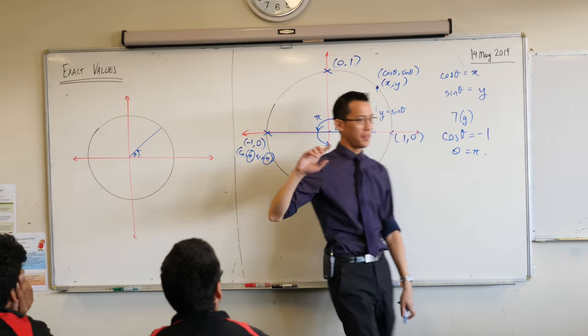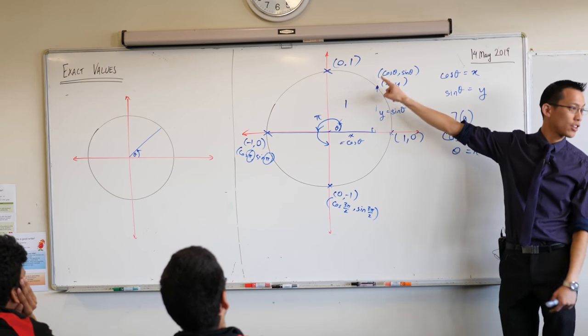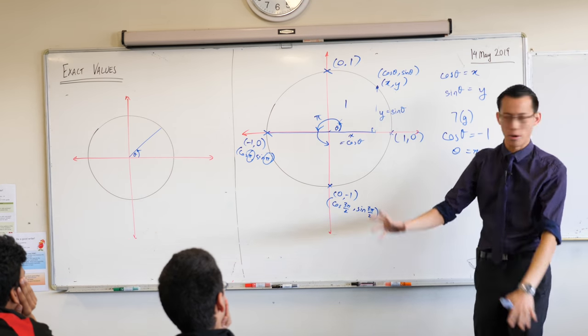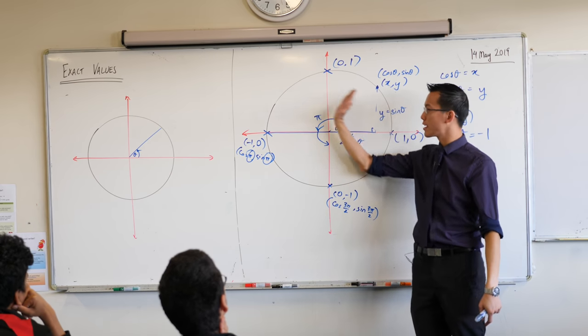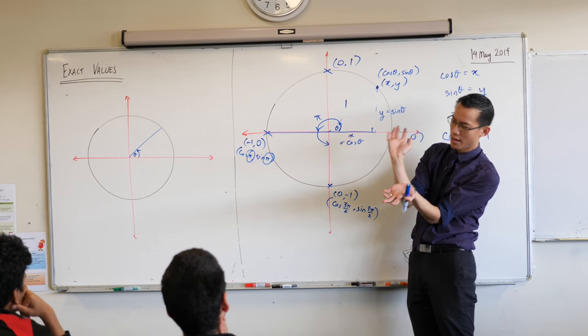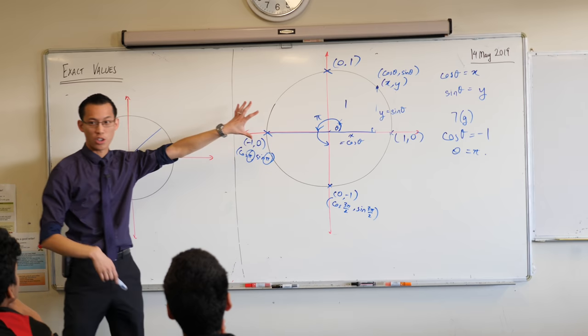So remember we said the unit circle gives you a new definition for sine and cos that's sort of nothing to do with triangles anymore. It's to do with this circle and where you are on it. That's very important because when you have angles bigger than 180 degrees, you can't fit them in triangles. You can't draw any triangle that can contain those angles, so that's why the unit circle helps us there.